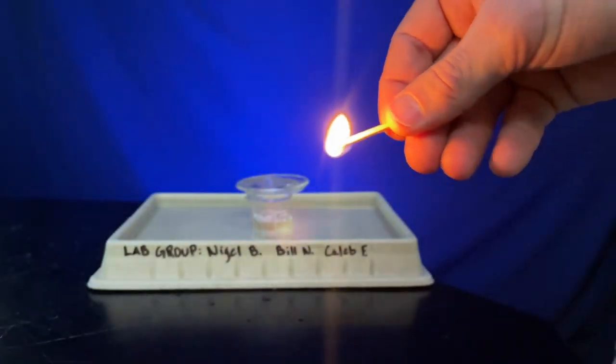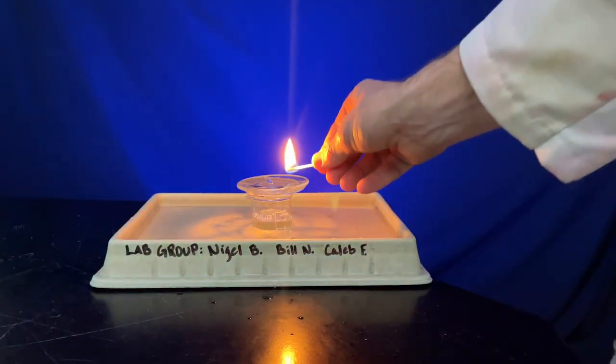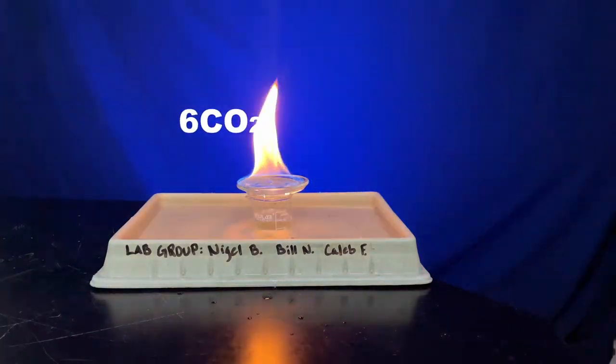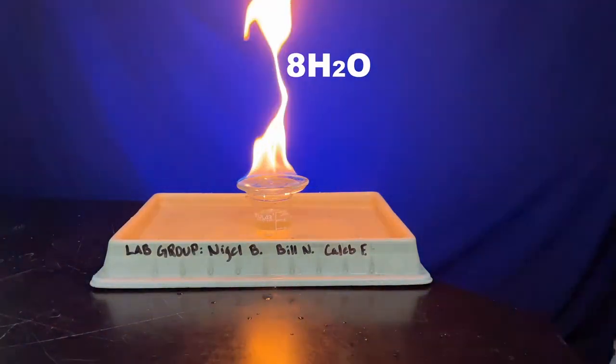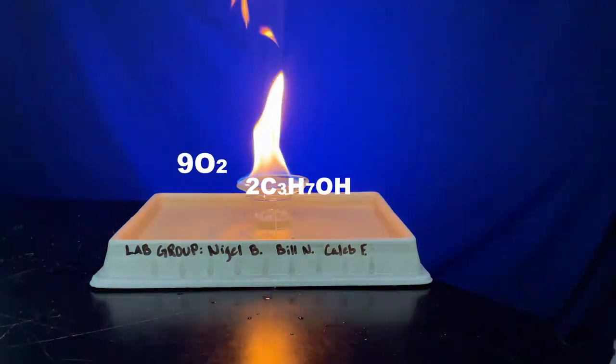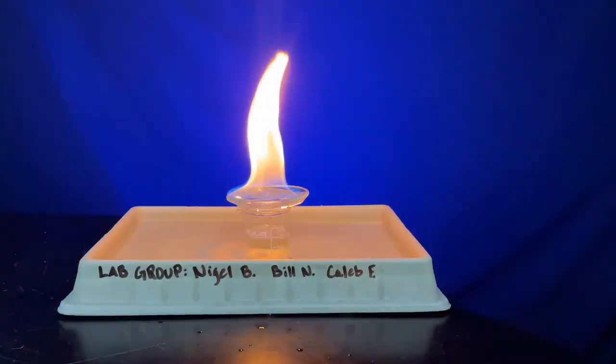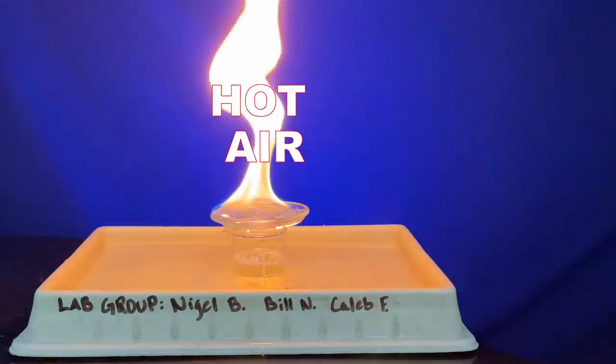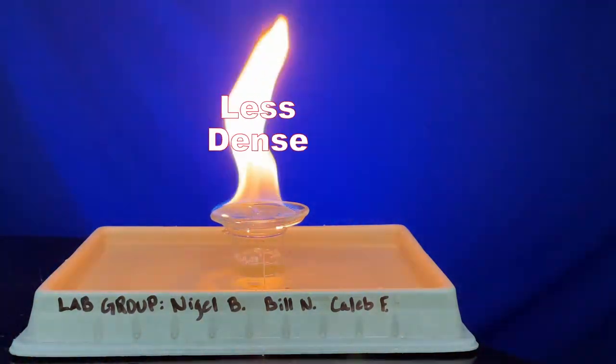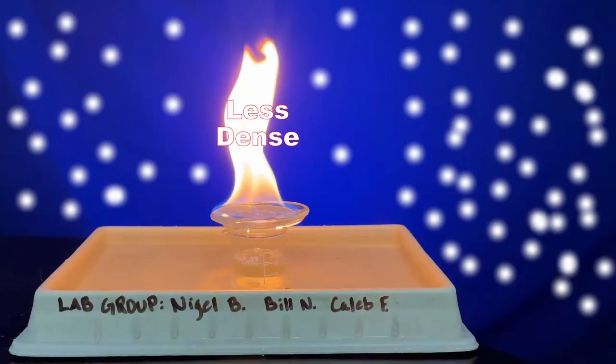What's going on now? The combustion equation of alcohol is two alcohols reacting with nine oxygens to produce six carbon dioxide and eight waters. Secondly, the air around the flame is hot and that's significantly less dense than air further from the flame, maybe looking a little like this.